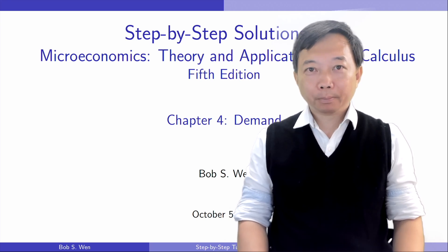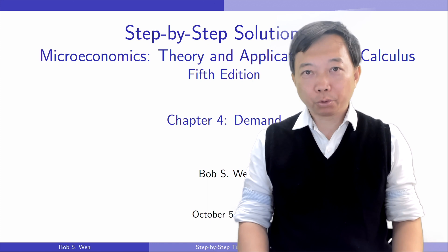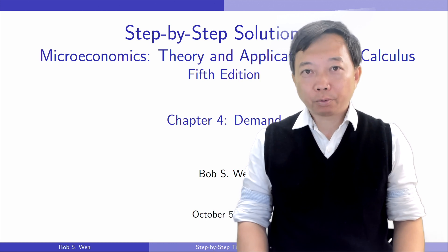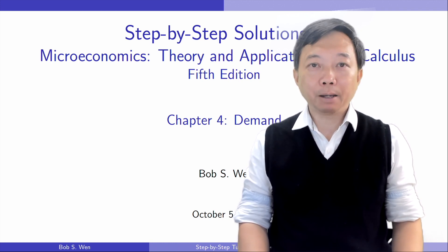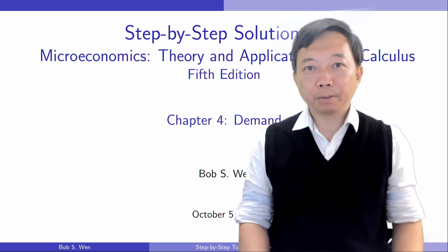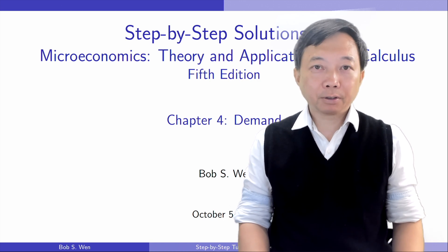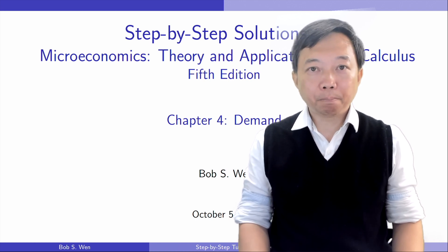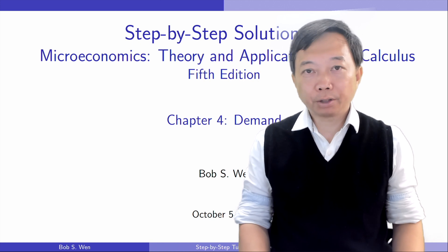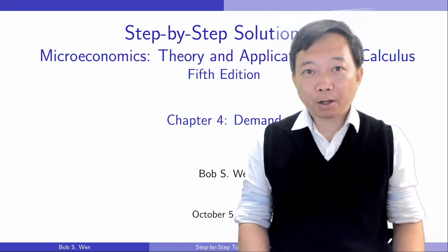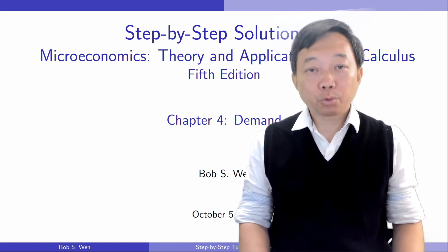Hi, I'm Bob. Welcome back to the step-by-step solutions to the textbook Microeconomics: Theory and Applications with Calculus, the fifth edition by Professor Jeffrey Perloff. We have reached chapter 4, Demand. We will solve the first section about deriving demand curves from the optimal consumption bundles when the price of a good changes. You can review the topic before solving the exercises. The link to the introductory Microeconomics course is in the description below.